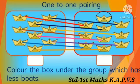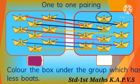We have to color the box under the group which has less boards. Let's color the box given below group A because group A has less boards than group B. By one-to-one pairing, we can easily decide more or less groups.